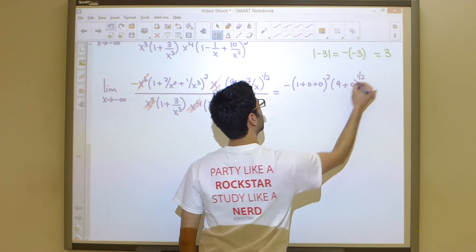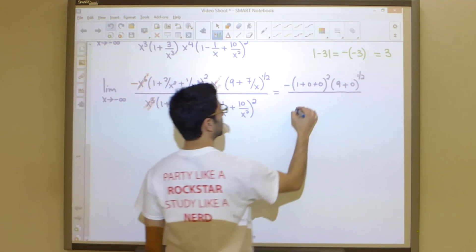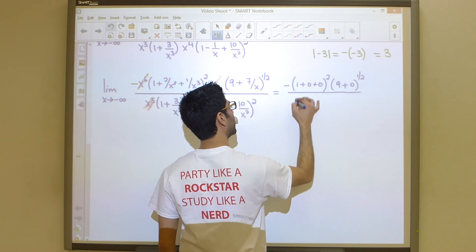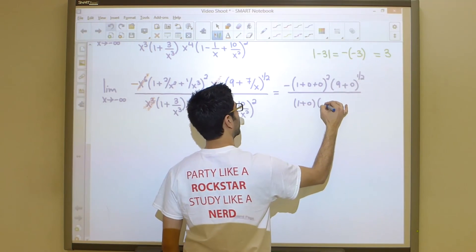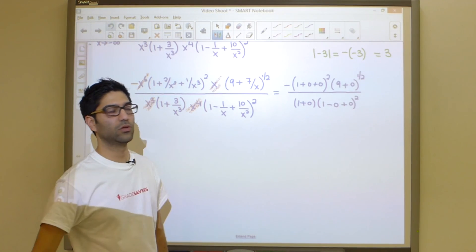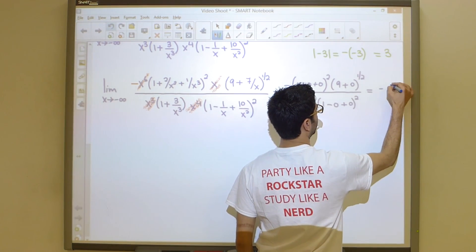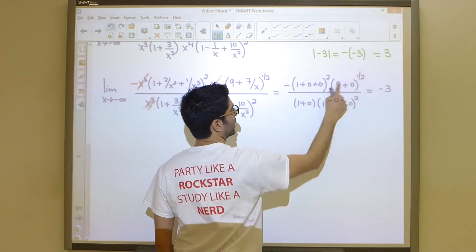So what do we end up with? We end up with negative one plus zero plus zero to the power of two, nine plus zero to the power of a half, all divided by one plus zero multiplied by one minus zero plus zero squared. Now that's not going to take us too long to discover that the answer over here is simply negative three.